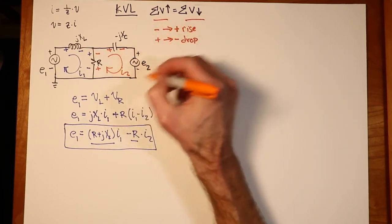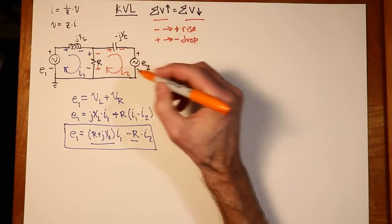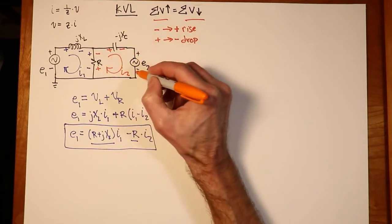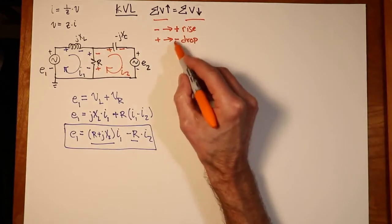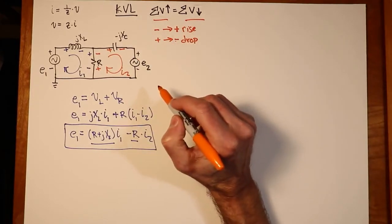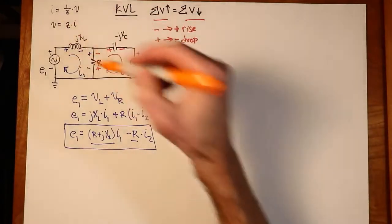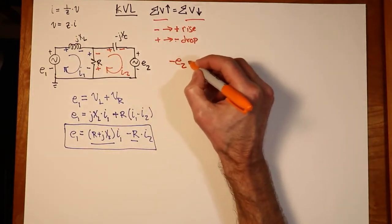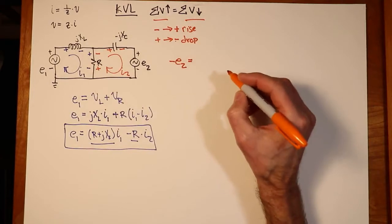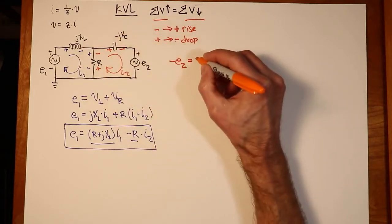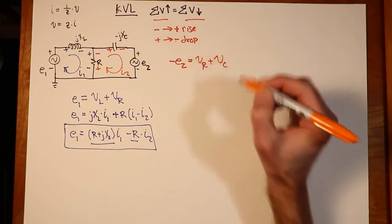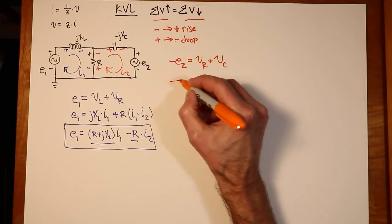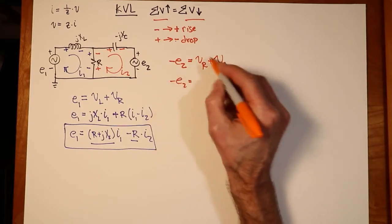I2 is coming out of the negative terminal. This shows up negative. It's coming out of the negative terminal. So we can show that as negative on the rise side of the equation. I can say a negative E2 has got to be equal to the drop on the resistor plus the drop on the capacitor.